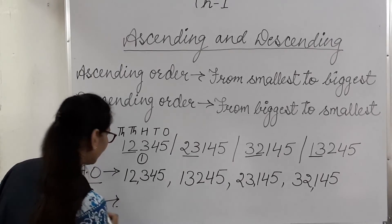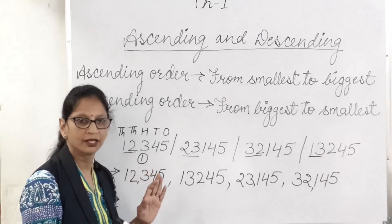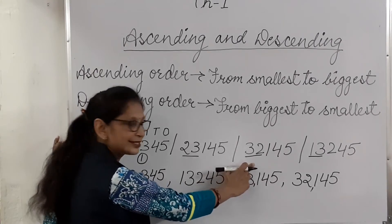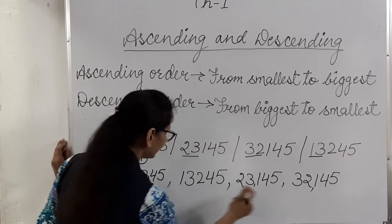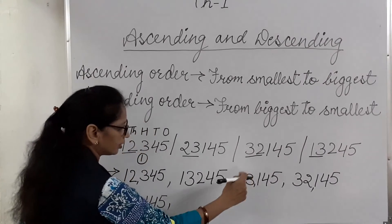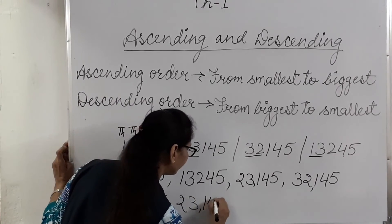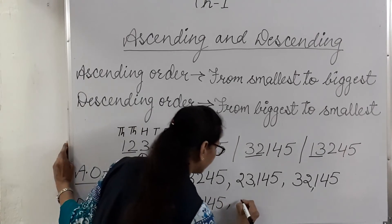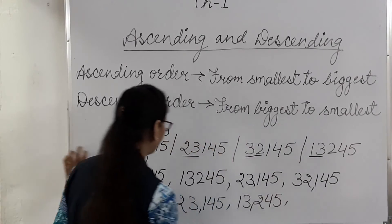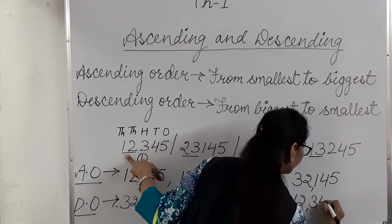Now descending order — descending means biggest to smallest. Starting from the biggest number. What is the biggest number in this series? The biggest number is thirty-two thousand one hundred and forty-five. Next is twenty-three thousand one hundred and forty-five. Then thirteen thousand two hundred and forty-five. And the smallest number is twelve thousand three hundred and forty-five.